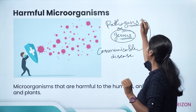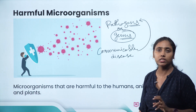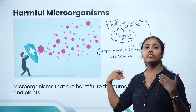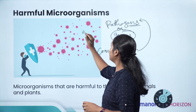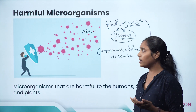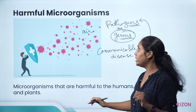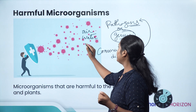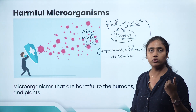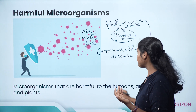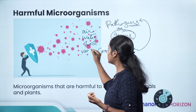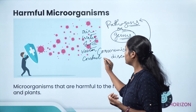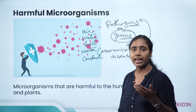Communicable diseases can be spread through many different modes. They can spread through air — in the case of cold or flu. Through water — typhoid and cholera. Through food — cholera can also spread through food. Through vectors such as mosquitoes and house flies. And also through contact.